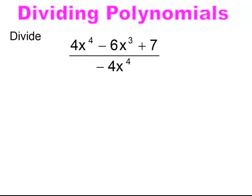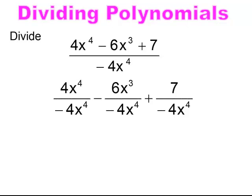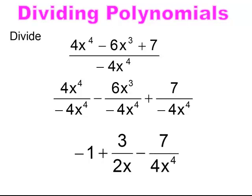Pause and try. I'm separating it into three separate problems. When I simplify the first piece, I have 4x to the fourth over negative 4x to the fourth — that's going to give me negative 1. And because I have a negative negative, that's going to change to a plus. I'm reducing that 6 over 4 to 3 halves, and my highest exponent is in the denominator, so I subtract and leave it there, ending up with 3 over 2x. Then the last piece — that plus minus changes to minus 7 over 4x to the fourth.